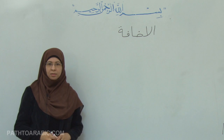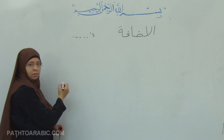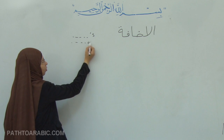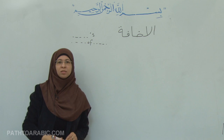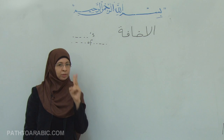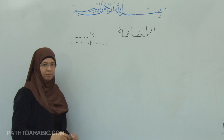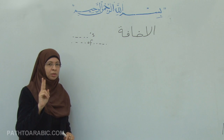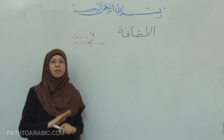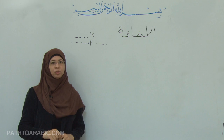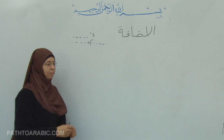Al-idhafa — it means like in English if you have apostrophe-s or you have 'of'. Idhafa consists of two nouns, and the meaning is like apostrophe-s or 'of the'. Two nouns — you have to know that the first noun in idhafa is never definite, so there is no alif lam and there is no possessive ending.